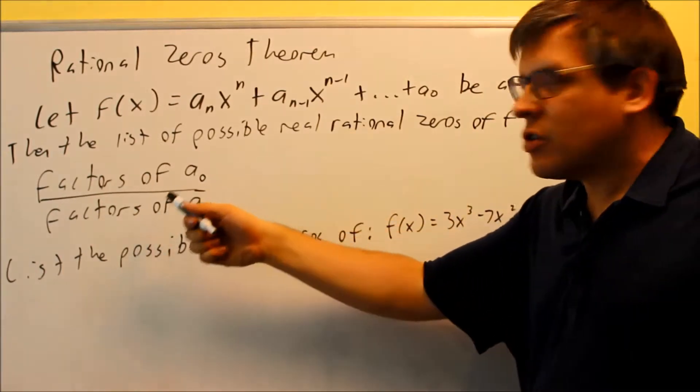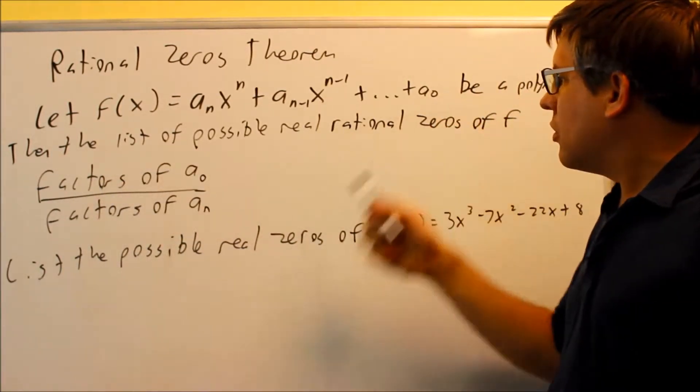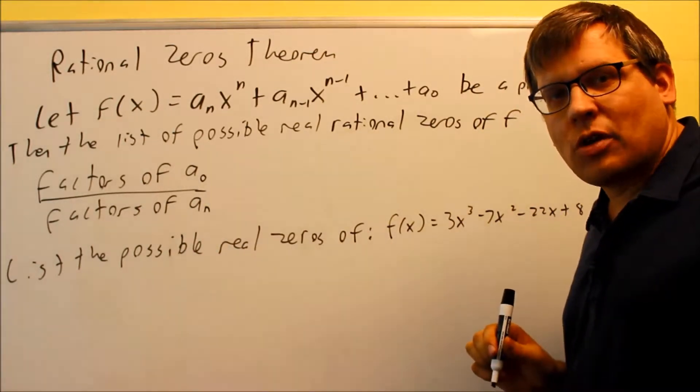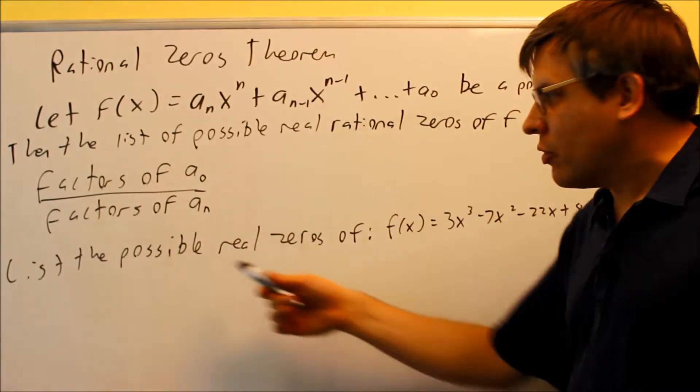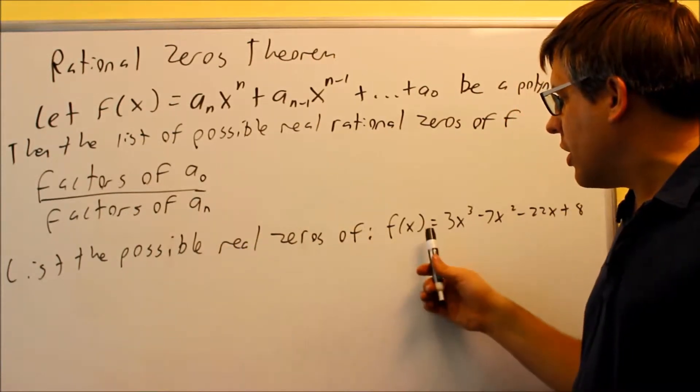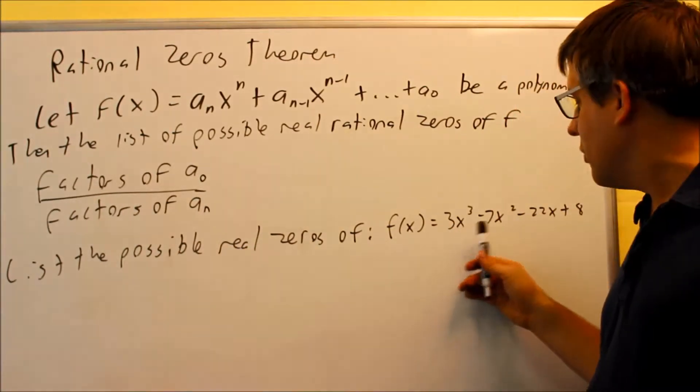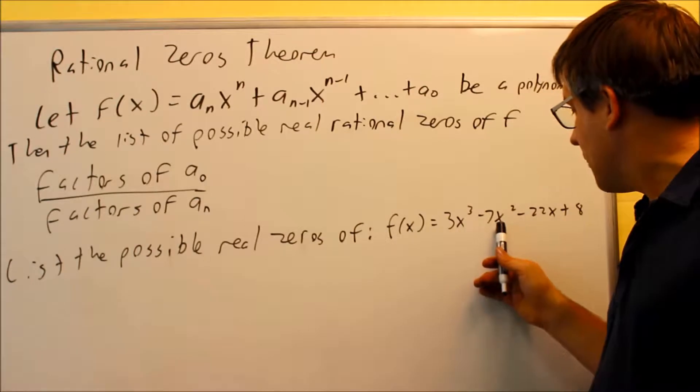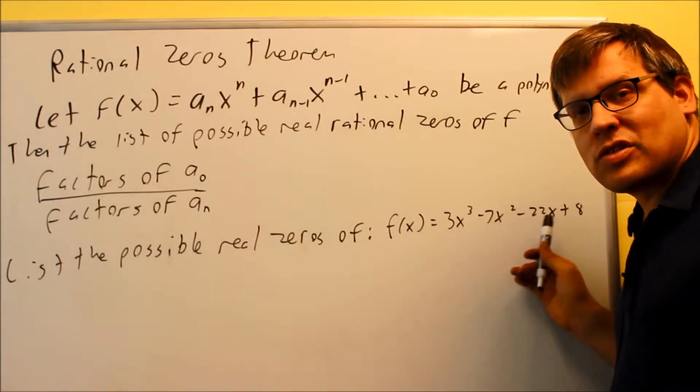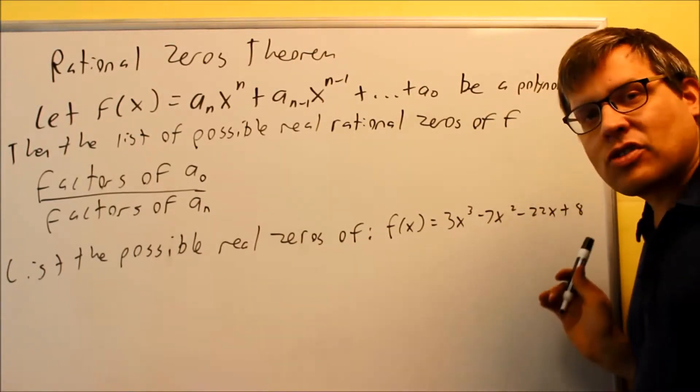The formula for it is you're going to take factors of the last number over factors of the first number. So that's what we're going to do here. We're going to do an example. List the possible real zeros of this one. This is 3x cubed minus 7x squared minus 22x plus 8. That's the f of x that we're working with here.